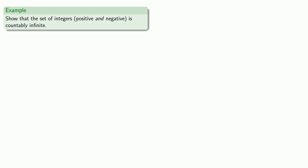So let's show that the set of integers, positive and negative, is countably infinite. Now, we need to find a way to list all the integers. And so our first thought might be, well, let's just list them: zero, one, two, three, four, and so on. But this won't work, since we never get to a point where we can list the negative integers.